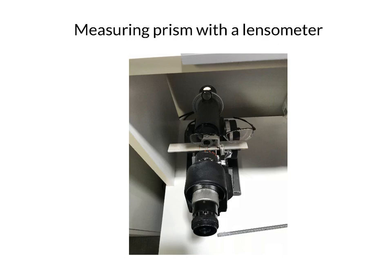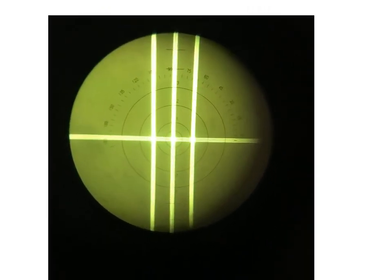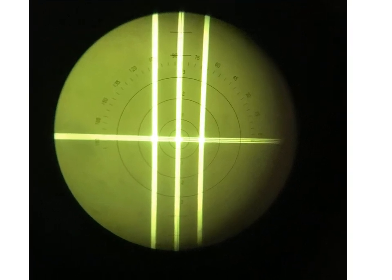When you look inside a lensometer, when you look through this eyepiece, you see a target. Here there is no prism, so the target is centered in the middle.